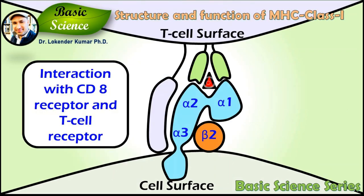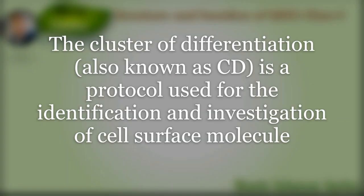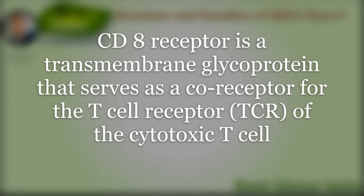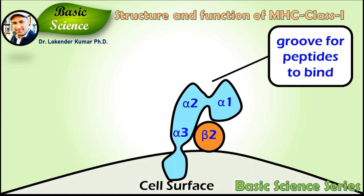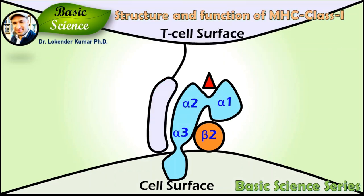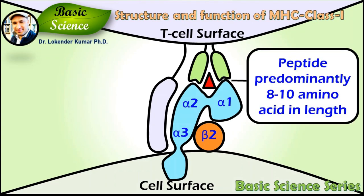The MHC class 1 molecule complex interacts with the CD8 co-receptor and T cell receptor to recognize foreign molecules. The alpha 1 and alpha 2 domains fold to make up a groove for peptides to bind, while the alpha 3 domain interacts with the CD8 co-receptor. This alpha 3–CD8 interaction holds the MHC class 1 molecule in place while the T cell receptor on the surface of cytotoxic T cells binds with the alpha 1 and alpha 2 chains and checks the coupled peptide for antigenicity. MHC class 1 molecules bind peptides that are predominantly 8 to 10 amino acids in length, though binding of longer peptides has also been reported.